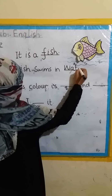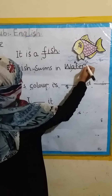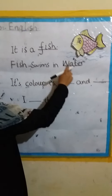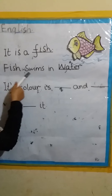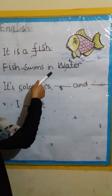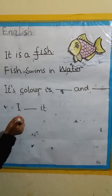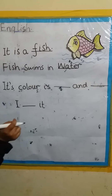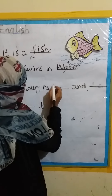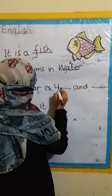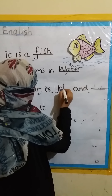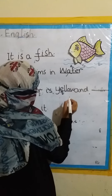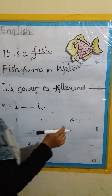Water. Fish swims in water. Fish swims in water. Its color is — yes, tell me — yellow! Yeah, yellow and pink.